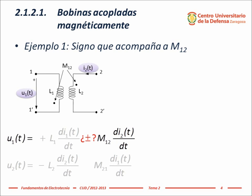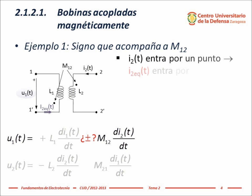Sign of the term containing the mutual induction coefficient M sub 1 2. We look at the reference of the current flowing through coil 2, the voltage reference of coil 1, and the corresponding terminals of both coils. The current reference in coil 2 enters the terminal marked with the point.